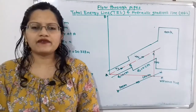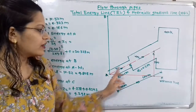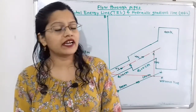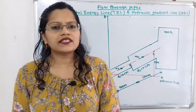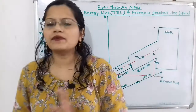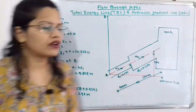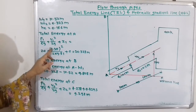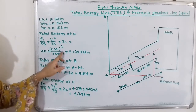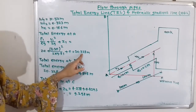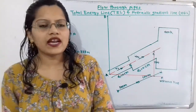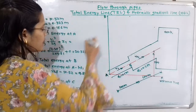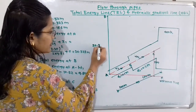Now we will draw the total energy line. We need total energy at points A, B, and C. Total energy at A = pressure head + kinetic head + datum head. Since the center of pipe at A is on the reference line, datum head Z1 = 0. Pressure head = 20 m, kinetic head = V1²/(2G) = 2.54²/(2 × 9.81) = 0.328 m. Total energy at A = 20.328 meters. We draw a vertical line from point A to height 20.328 m and label it point D.